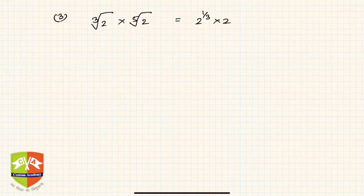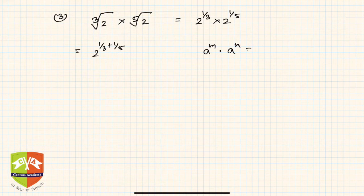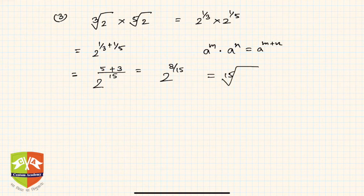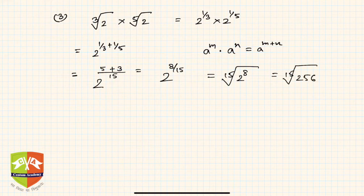This is very simple because it can be written as two to the power one-by-three, multiplied by two to the power one-by-five, which equals two to the power one-by-three plus one-by-five, using the rule: a to the power m times a to the power n equals a to the power m+n. Taking LCM of 3 and 5 gives 15, so the exponent is 5/15 + 3/15 = 8/15. The answer is two to the power eight-by-fifteen, or the 15th root of 2⁸, which is the 15th root of 256.